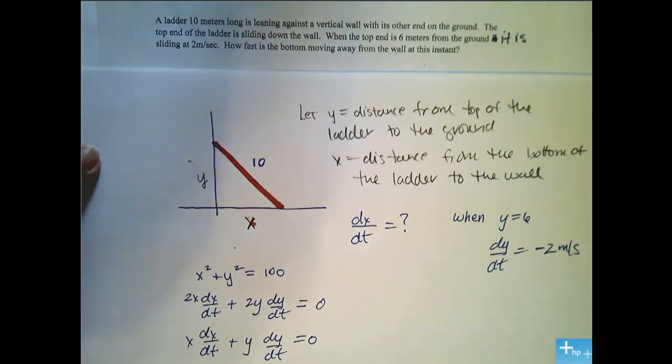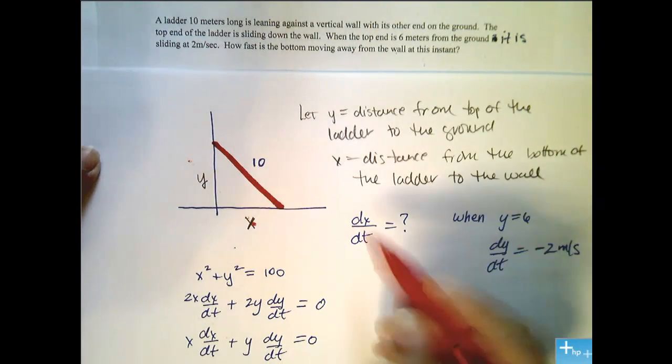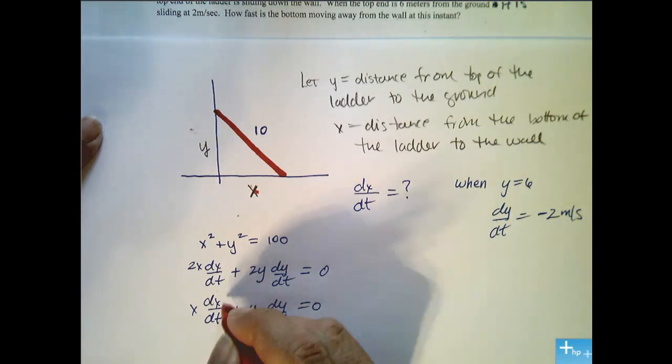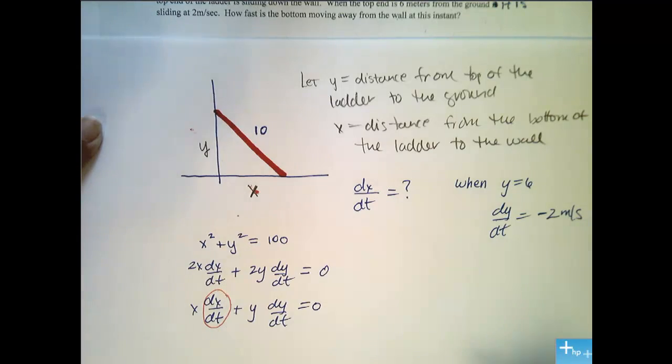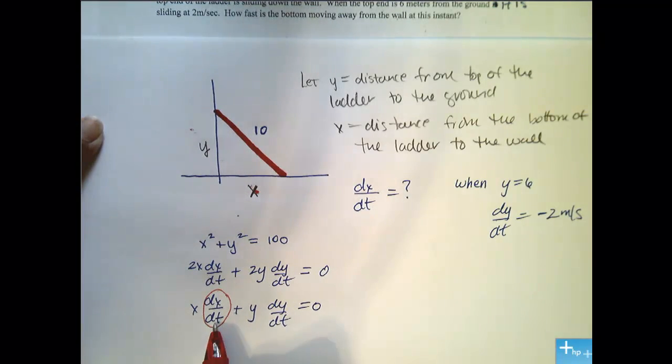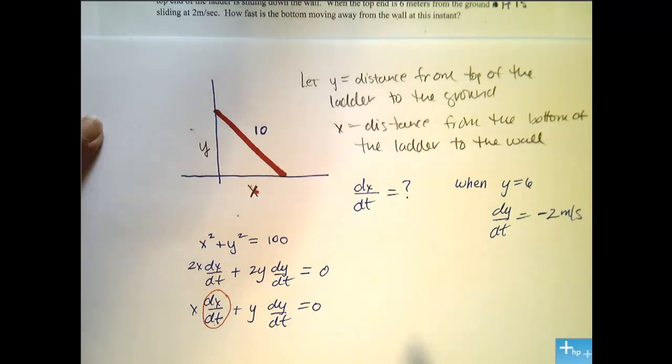I can divide everything through by 2, and I get x dx/dt plus y dy/dt equals 0. Now, at this point, I usually go back and look and remind myself what is it I'm looking for? dx/dt, because I have a lot going on here. And I circle it to remind myself that I need to solve for that, which means I need to be able to plug in values for all the rest. So let's solve for dx/dt.